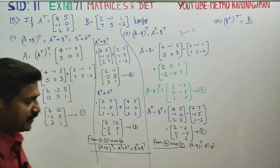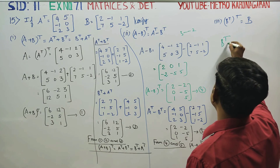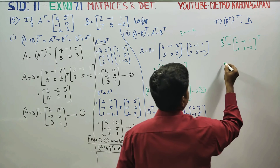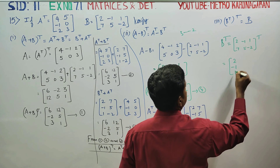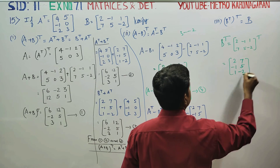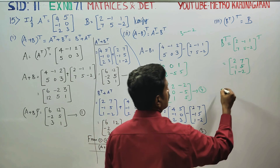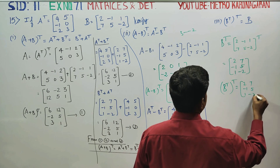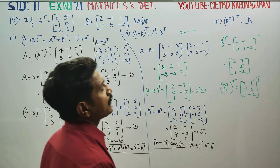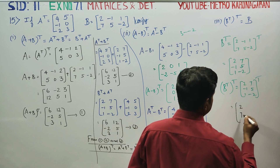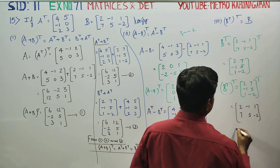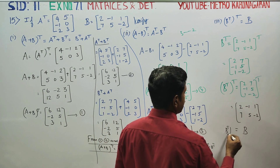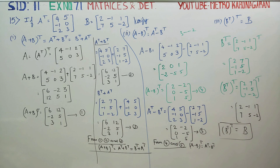Last result: B transpose transpose is equal to B. B transpose is 2, minus 1, 1, 7, 5, minus 2. Taking the transpose again of B transpose gives 2, 7, minus 1, 5, 1, minus 2, which equals B. So B transpose transpose is equal to B. This is the completion of the third subdivision. Thank you.